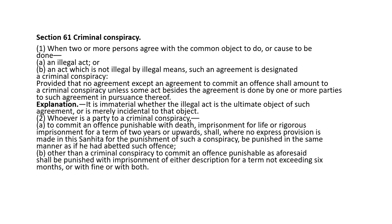Clause 2: whoever is a party to a criminal conspiracy to commit an offense punishable with death, imprisonment for life, or rigorous imprisonment for a term of two years or upwards shall, where no express provision is made in the Sahita for the punishment of such conspiracy, be punished in the same manner as if he had abetted such offense. Other conspiracies shall be punished with imprisonment not exceeding six months, or with fine, or with both.